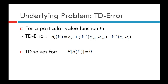Now let us analyze the TD error. The TD error for a value function V at time step t is represented as δ_t(V), defined as the immediate reward r_{t+1} plus γ times the value of the next state-action pair (s_{t+1}, a_{t+1}), minus the value of the current state-action pair (s_t, a_t). TD learning methods solve for the expected TD error equal to zero — that is, the mean value of the TD error is zero.